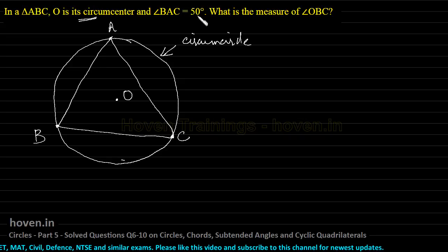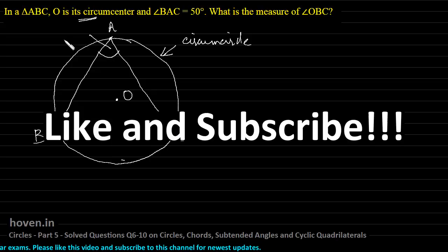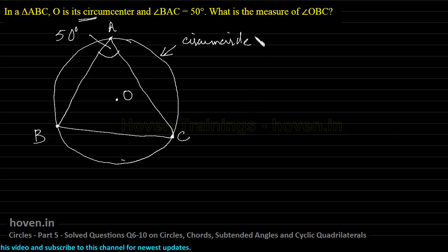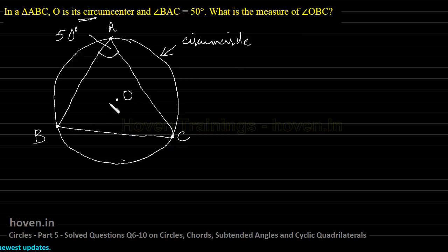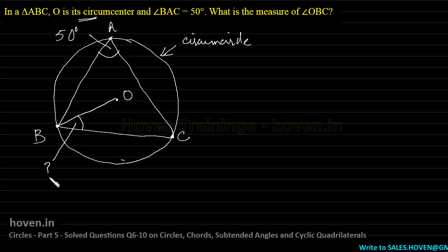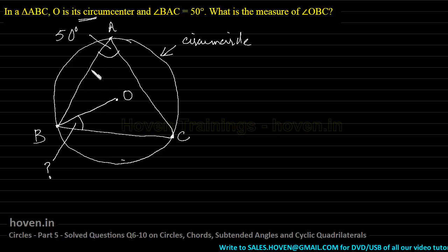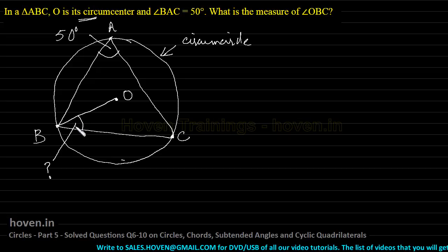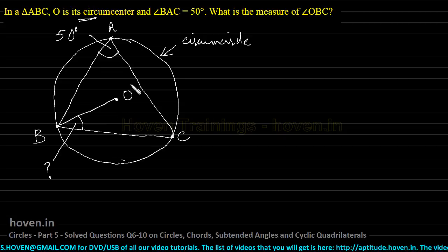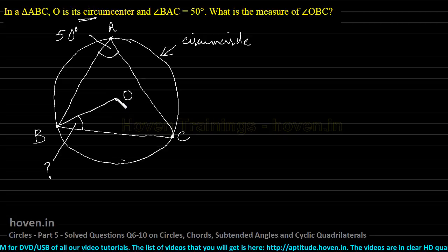Angle BAC has been given as 50 degrees. We need to find the measure of angle OBC. Angle OBC will look like this — so let us join O and B. This is the angle we have to determine: angle OBC. These two angles look quite unrelated, but I can show you by a suitable construction that it is possible to find a relationship between them.